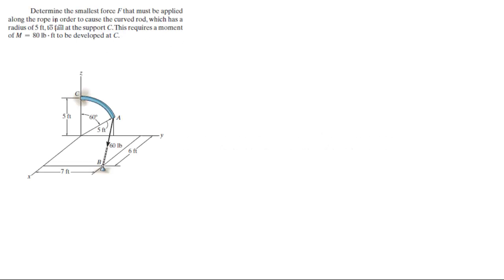Alright guys, now they're asking us to determine the smallest force F that must be applied to the rope in order to cause the curved rod to fail, which has a radius of 5 feet, to fail at the support C. This requires a moment of 80 pounds per foot.